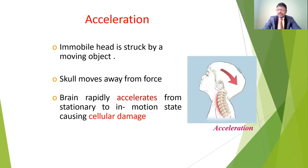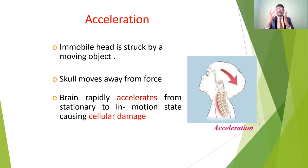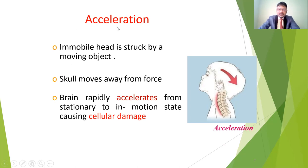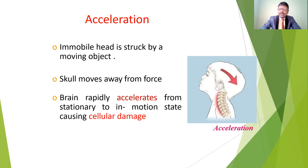Other effects include acceleration and deceleration. Acceleration means an immobile head is struck by a moving object — for example, you are standing somewhere and something moving hits your head. The head is stabilized, a moving object hits it, causing a shake and head injury. The skull moves away from the force, giving damage inside the brain. The brain rapidly accelerates from stationary to motion, causing cellular damage.